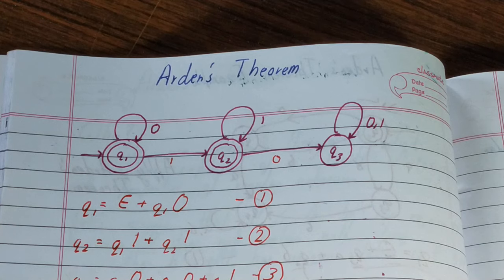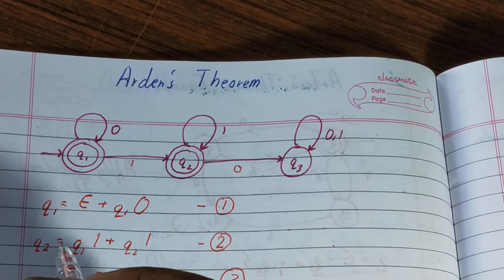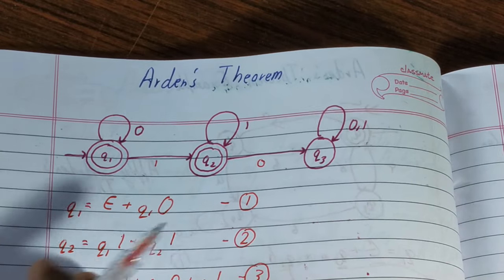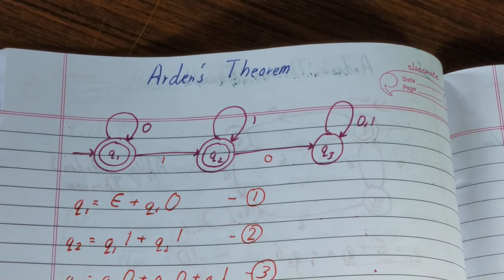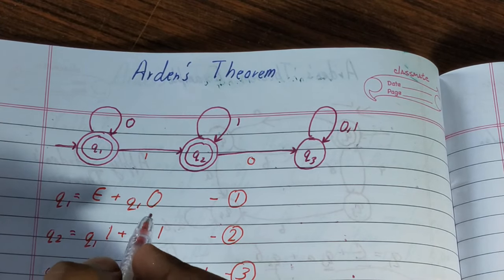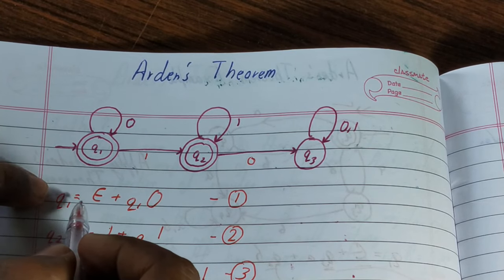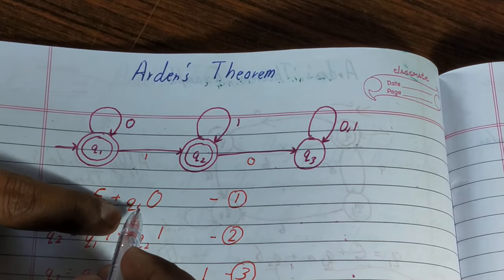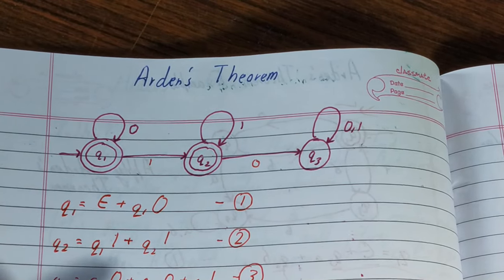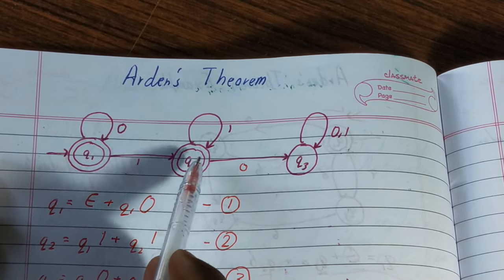Now let's start with the application of Arden's theorem. You'll look at the incoming edges to all the states. There is one rule of Arden's theorem: whatever is your initial state — in this case q1 — you will add null to it. You start with null and then add the incoming edges. Since q1 is our initial state, we add null, and the incoming edge towards q1 gives us q1 = null + q1·0. The same thing we'll do for q2: q2 = q1·1 + q2·1.